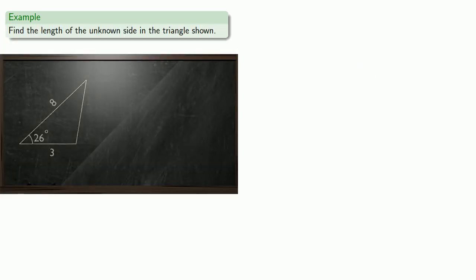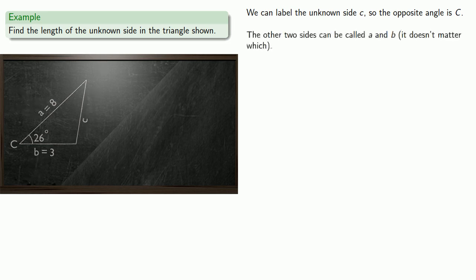For example, suppose we have a triangle like the one shown. We can label the unknown side little c, so the opposite angle is going to be big C. We can call the other two sides little a and little b, which means the opposite angles are big A, big B.